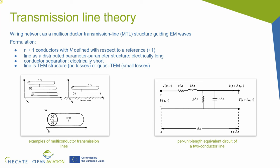These are some examples of multi-conductor transmission lines. Here, for example, we have three conductors where one of them plays the role of a reference conductor, or two conductors above the ground plane, where the ground plane plays the role of the reference conductor. Here, we have a coaxial cable with two wires inside, where the shield plays the role of the reference conductor.